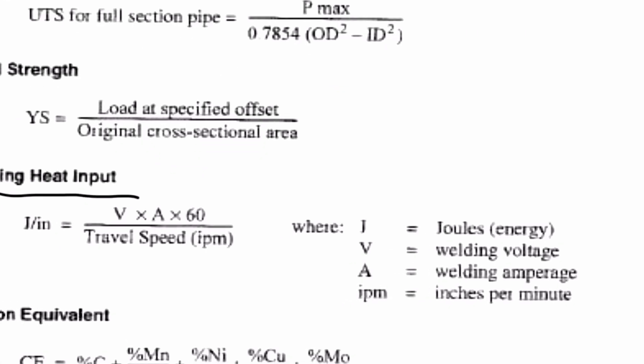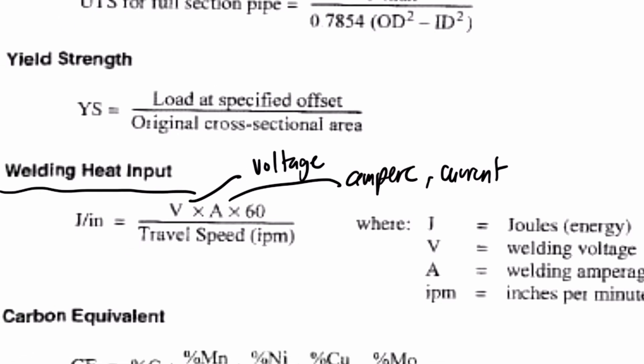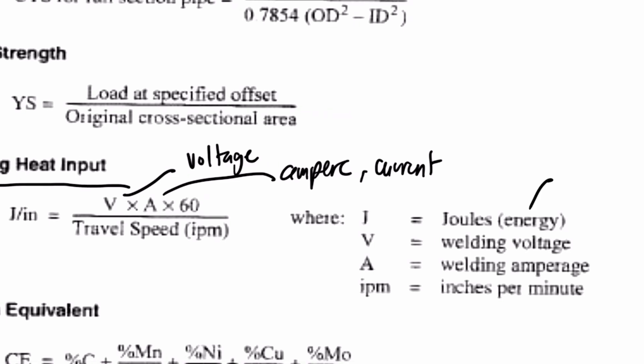It is given by this formula, where V is the voltage, A is the amperes or the current in amperes, times 60 over the travel speed, or the speed in which you deposit the weld onto the base metal. So the units here is joules, which is the measure of energy.